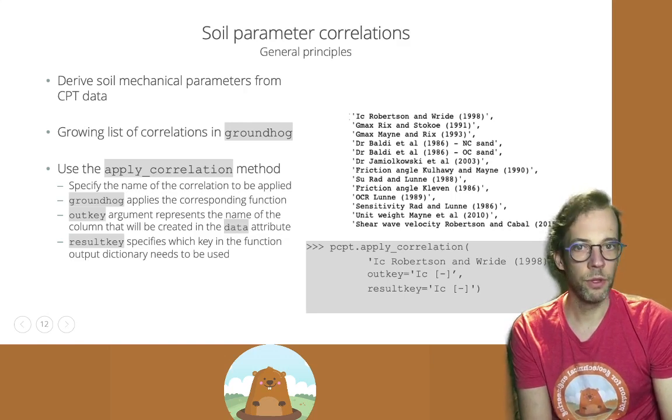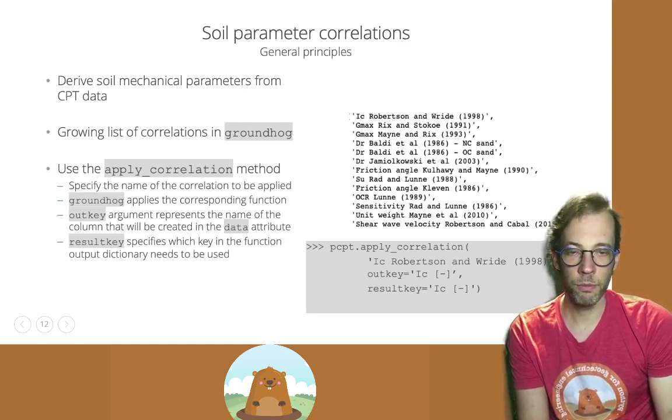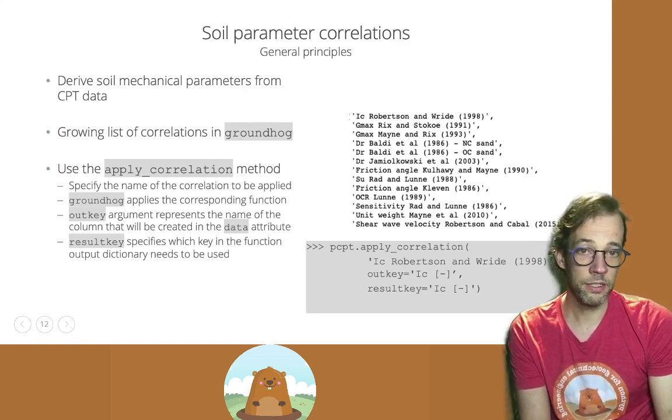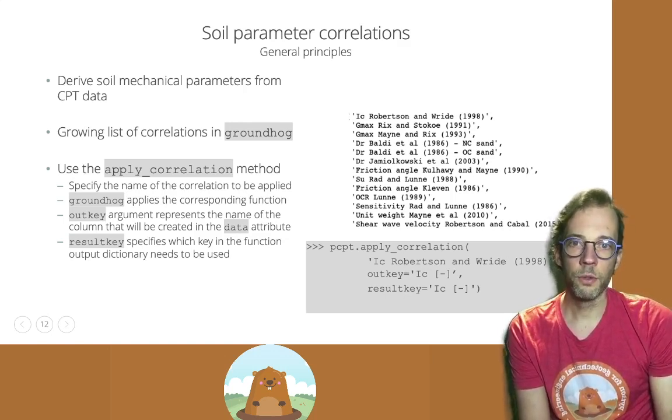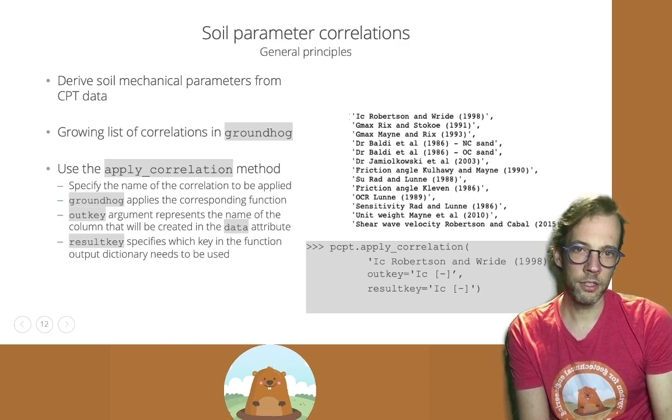We need to specify which name our output column will get. So here, in this example, we're going to apply the correlation for soil behavior type index according to Robertson and Wright and store that in the column IC and then units are unitless between square brackets.